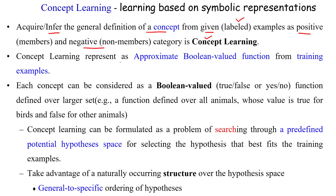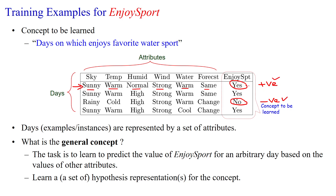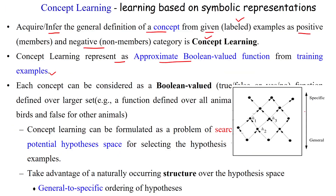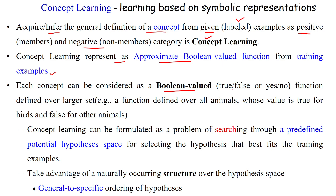Concept learning is represented as an approximate Boolean-valued function over the training examples. The positive examples — where the answer is yes — may also be represented as one or true. Similarly, negative examples will be represented as zero or false. So we may use no, zero, or false to represent the negative samples, and we use Boolean-valued functions to represent the concept derived from the large dataset, which may be a set of animals, vehicles, or humans.